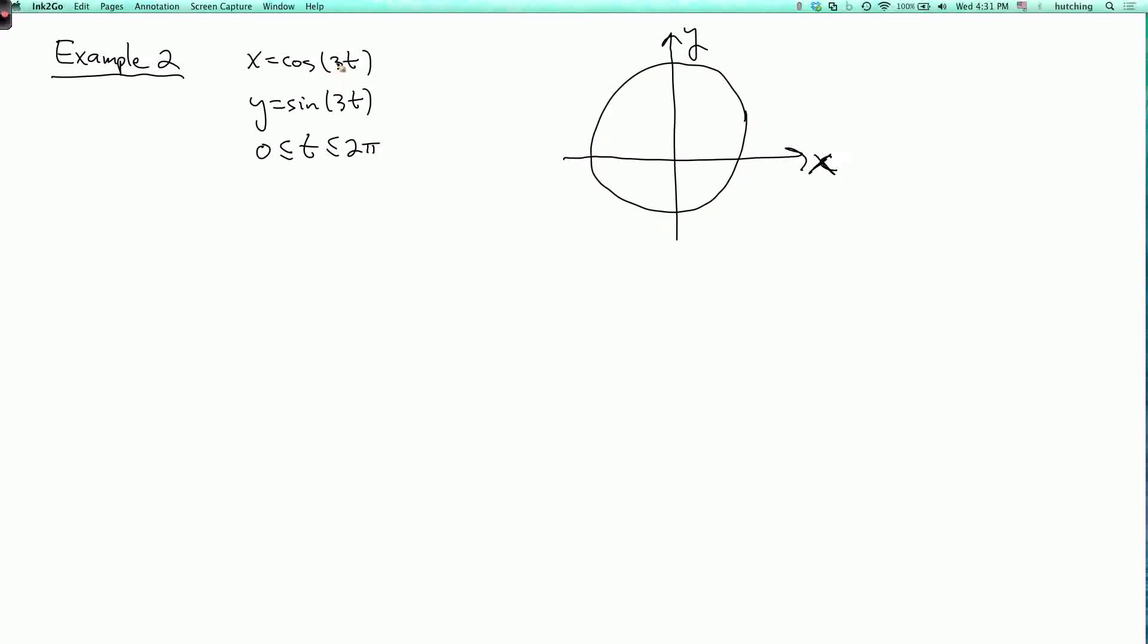But there's a difference from last time, which is this 3 here. This 3 means that we're moving around the unit circle 3 times as fast. So at t equals 0, we're at the point 1 comma 0. And then when t goes up to 2 pi over 3, we've already gone all the way around the circle. And then if we go another 2 pi over 3 and go up to 4 pi over 3, we go around the circle a second time. Then we go around the circle a third time up to t equals 2 pi. So the arrow still goes the same way, but we're now going 3 times as fast. So this is the unit circle going around counterclockwise 3 times.